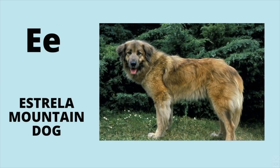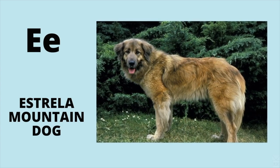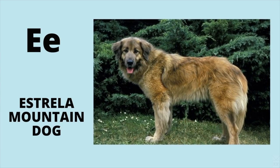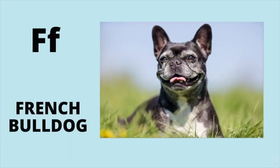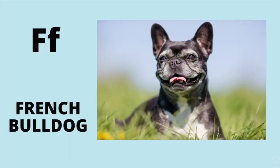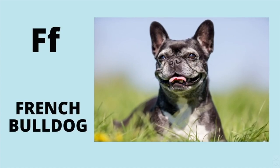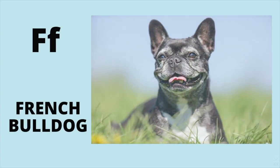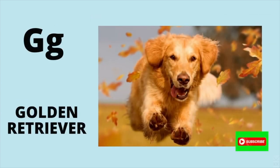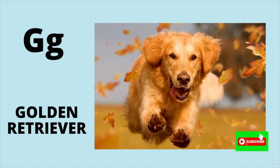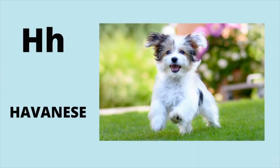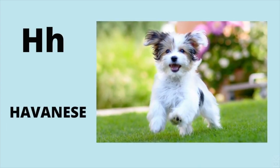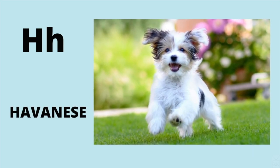E is for Estrella Mountain Dog. E, Estrella Mountain Dog. F is for French Bulldog. F, French Bulldog. G is for Golden Retriever. G, Golden Retriever. H is for Havanese. H, Havanese.